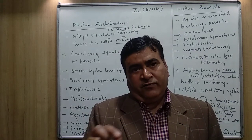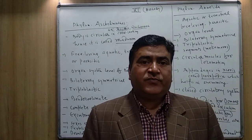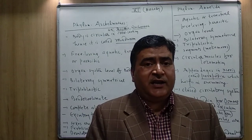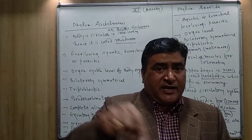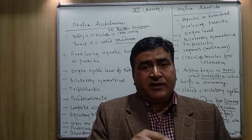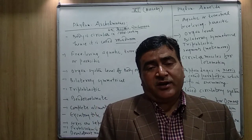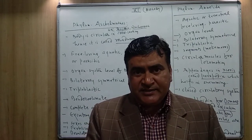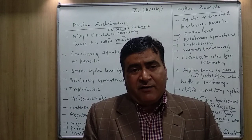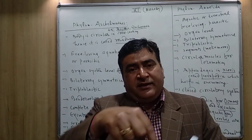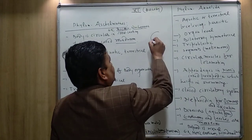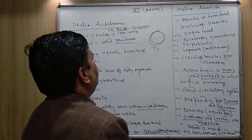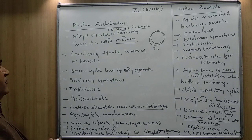The members of Aschelminths are also known as roundworms. Why are they called roundworms? When you cut the body section — the cross section — and observe it under the microscope, it looks circular in shape. The body of Ascaris is elongated and cylindrical, but after cutting the section it appears circular, and that is why they are called roundworms.